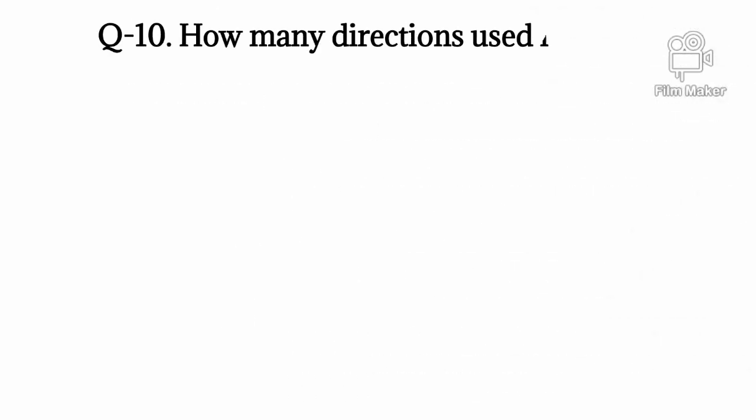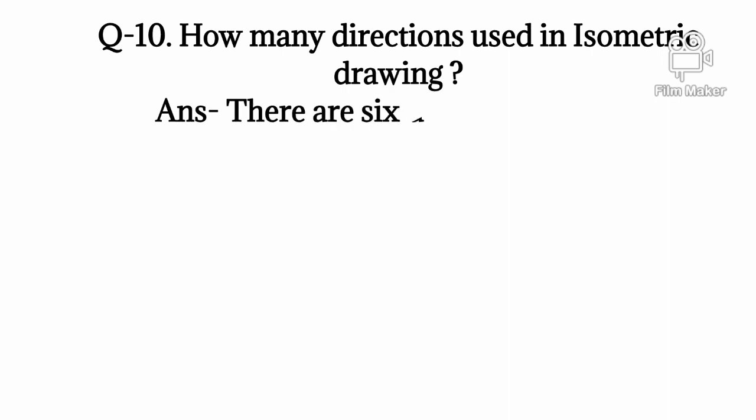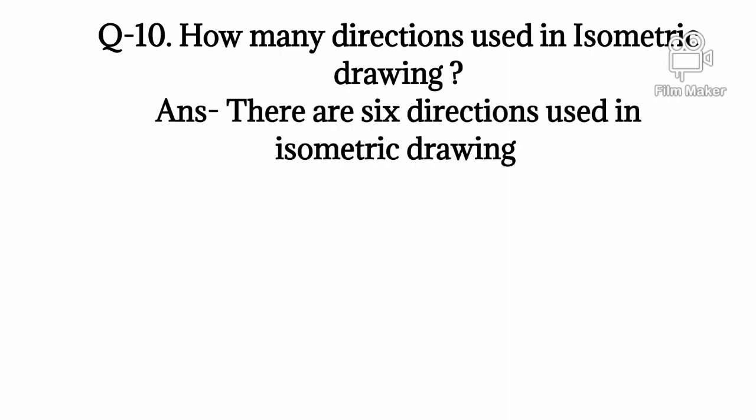Q10: How many directions used in isometric drawing? Answer: There are 6 directions used in isometric drawing: East, West, North, South, Up, and Down.